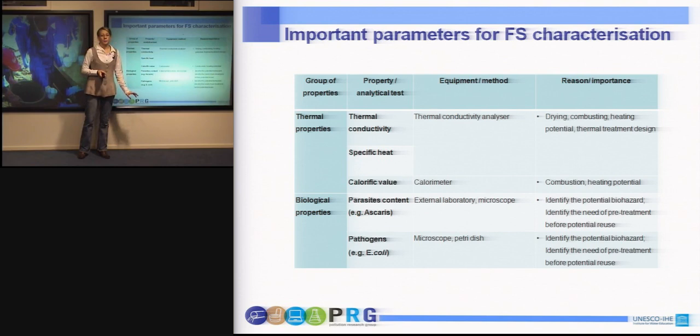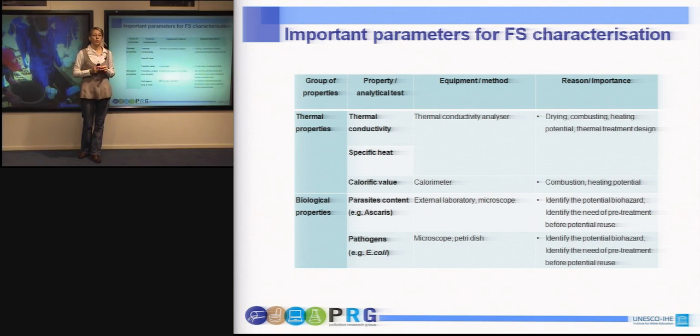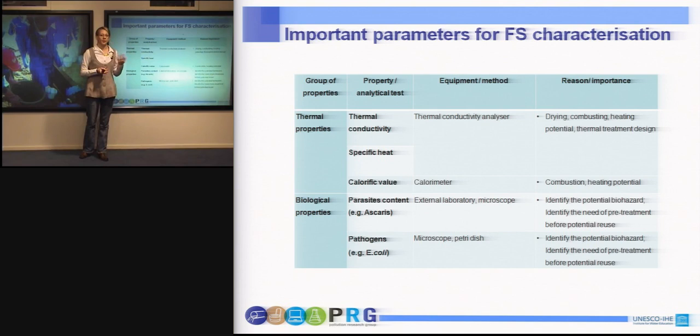Biological properties are very important, coming back to the aim of fecal sludge treatment — providing safe public and environmental health. For example, the Ascaris content is a very important indicator because Ascaris eggs are very resistant to any type of treatment technology. So it is considered that if a certain treatment technology manages to destroy the Ascaris eggs, then supposedly all other pathogens present in the sludge have also been destroyed.